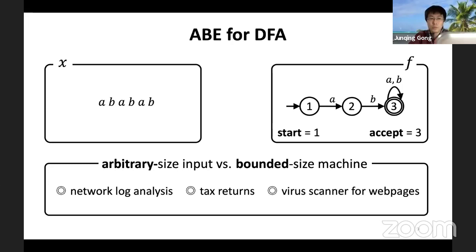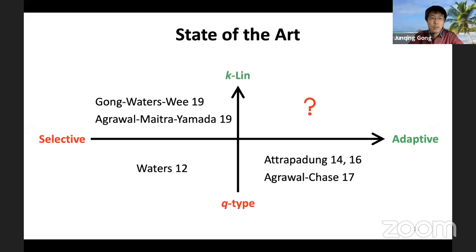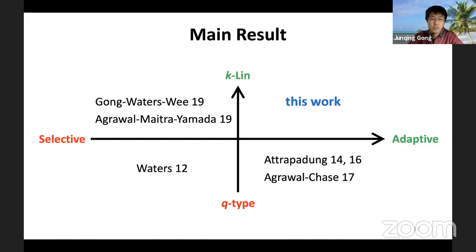We have seen a series of constructions since 2012; however, all of them use either the selective model or a q-type assumption. It remains an open problem to achieve adaptive security under the k-linear assumption, which is desirable in general. As our main result we resolve this open problem. There is also a concurrent work at this Eurocrypt with a different technique.